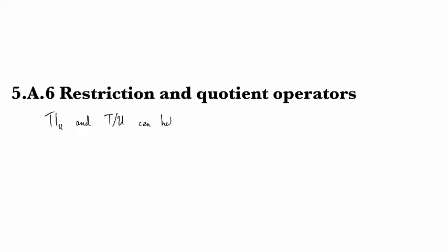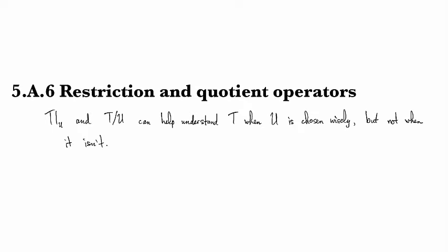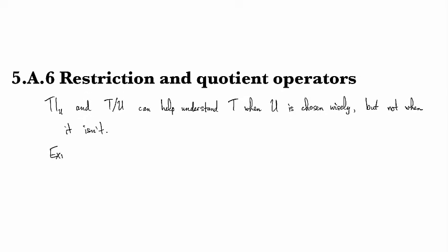These can help you study or understand an operator T when U is chosen wisely, but not necessarily when it isn't. So in this clip I'll show you an example of an operator where, when we choose U well, we'll see that the restriction and quotient operators turn out to be trivial even though U is not.